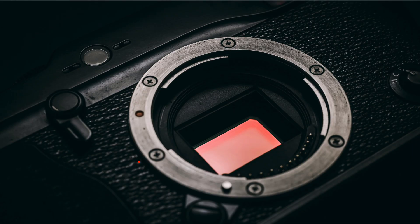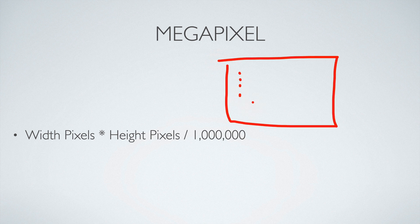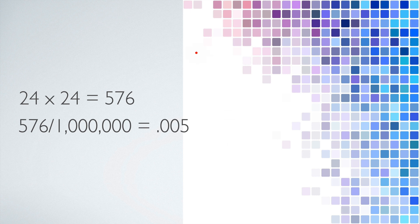Digital cameras are a capture device. When we refer to the resolution of a digital camera, we're referring to the resolution of the sensor — the CMOS sensor. A megapixel is simply 1 million pixels. The formula is: width in pixels times height in pixels, divided by 1 million. So you count all the dots horizontally, multiply by the vertical count, divide by a million, and that tells you how many megapixels that sensor can capture.